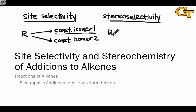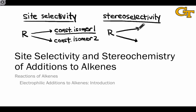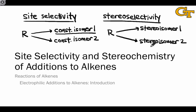Stereoselectivity is similar in that we're starting from a common set of reactants, but now instead of two possible constitutional isomers, there are two possible stereoisomers that could form, and these might be enantiomers or diastereomers. In the context of electrophilic addition, we're interested in diastereomers.